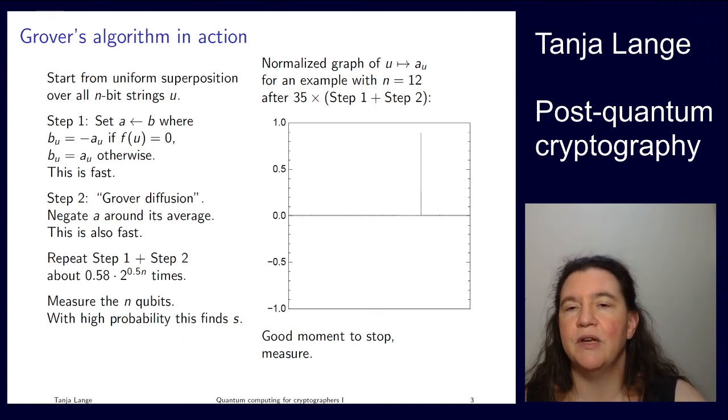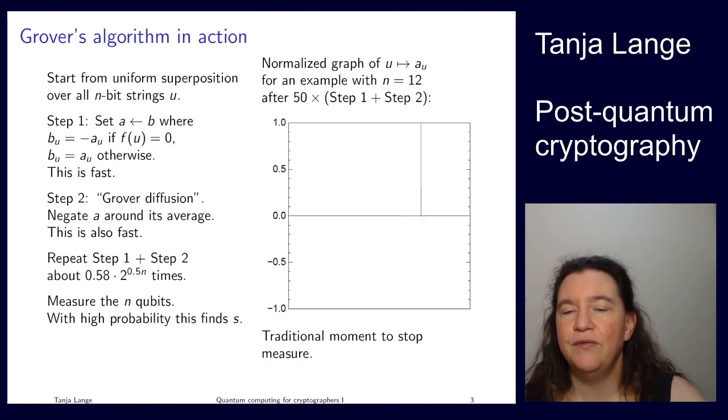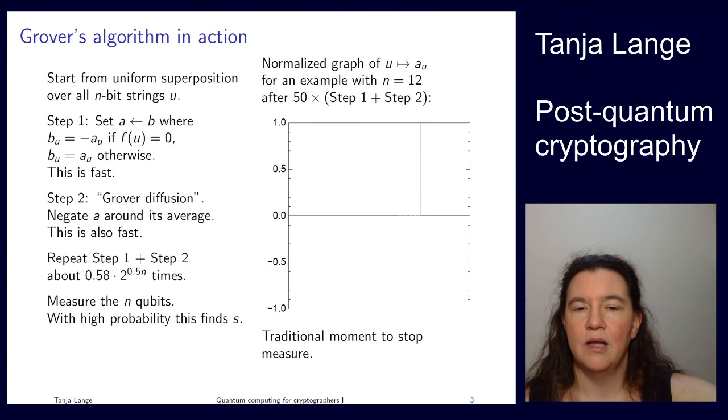Traditionally we're going to continue measuring and walking for a bit longer. So at 50, that's the traditional moment to stop. When we really reach very close to the 1 and everything else sits in essentially zero. Then we measure and we get this index.